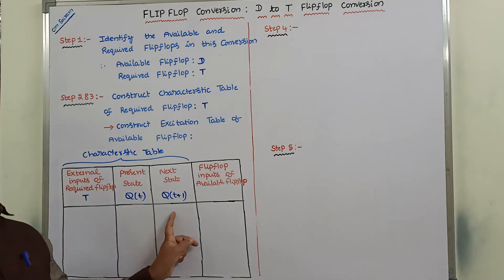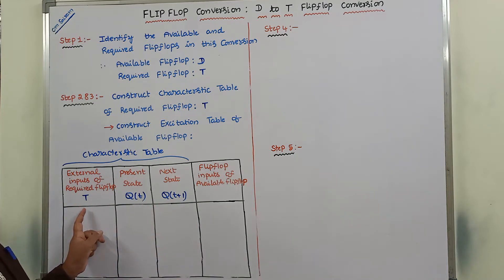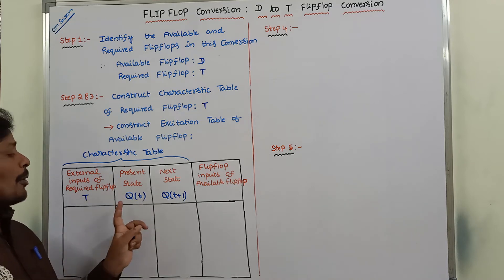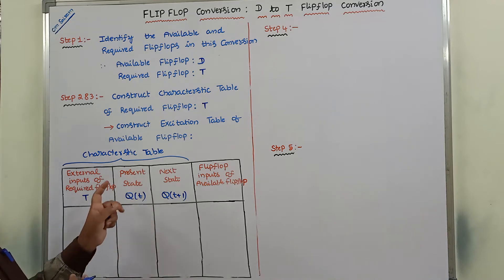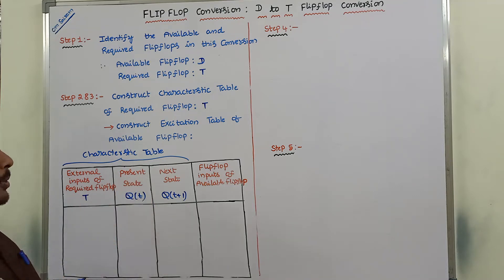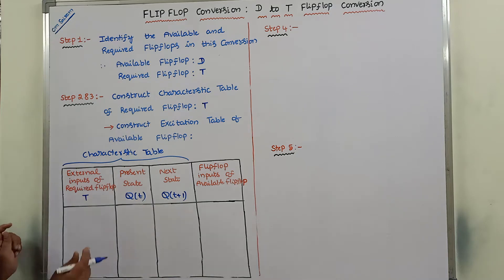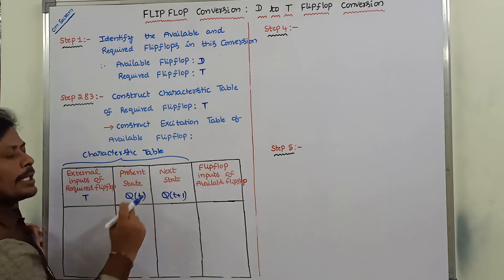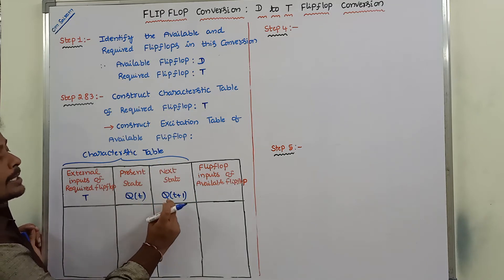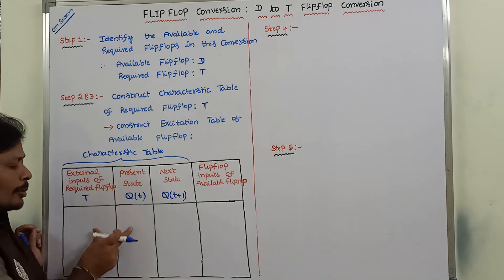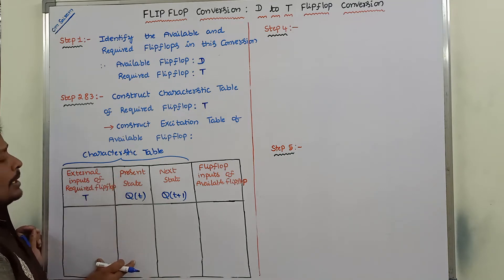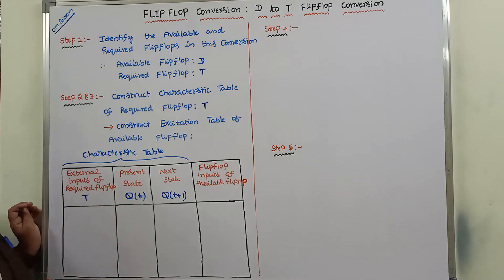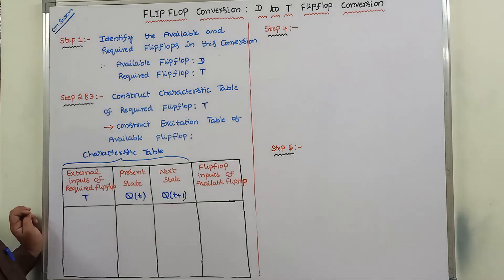In the characteristic table there are three columns. The first is the input column containing T. The second column contains Q(t), that is the previous state or present state. The third column is the next state or present output. To find out Q(t+1) we use T and Q(t) as the two input columns. So there are 2 inputs: T and Q(t).